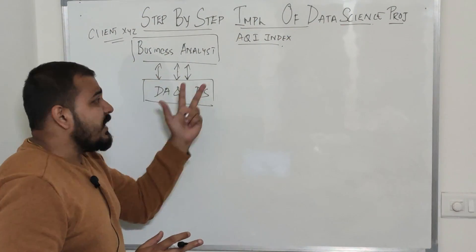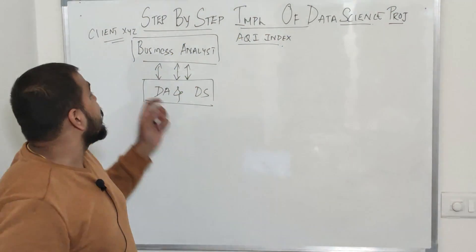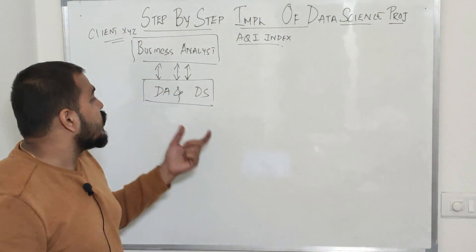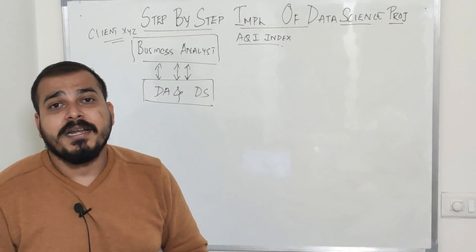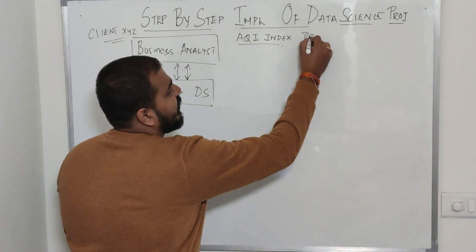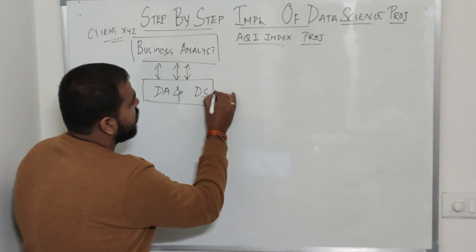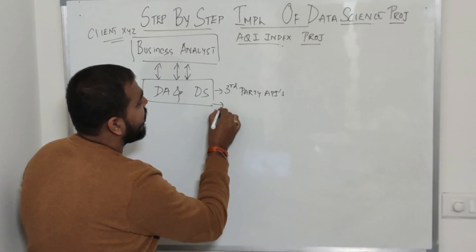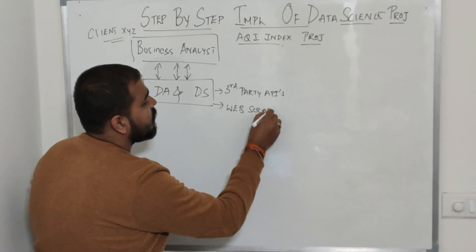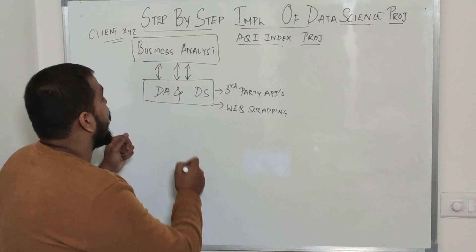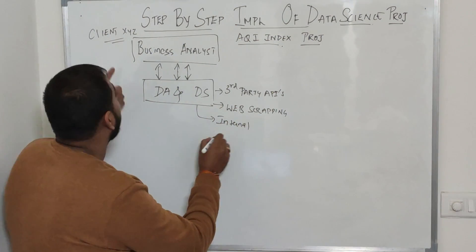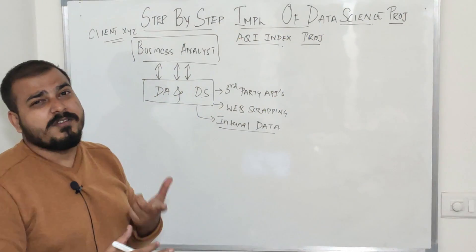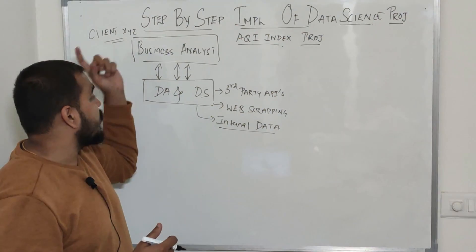During these discussions, the team figures out where data can be sourced from. The product-based company may already have some data internally, or it may depend on third-party APIs. They may also do web scraping to collect data. There may also be internal data that the client already has, and domain knowledge people from that specific client will have information relevant to the project.